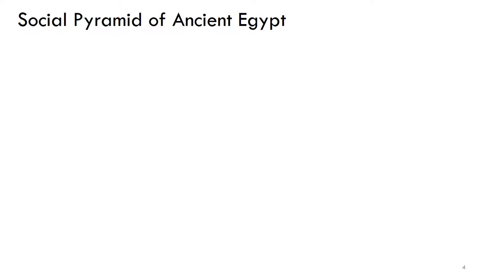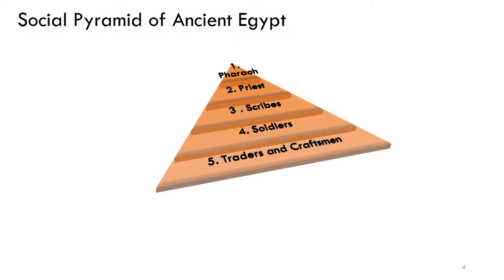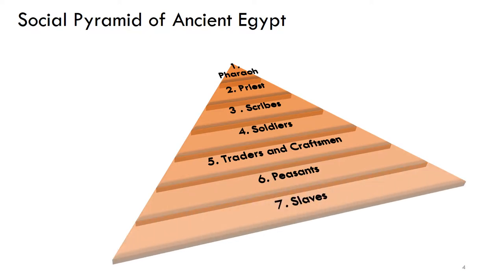This is the Social Pyramid of Egypt. The Pharaoh, the Priests, the Scribes, the Soldiers, the Traders and Craftsmen, the Peasants and the Slaves.